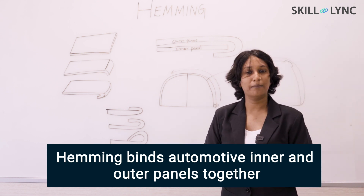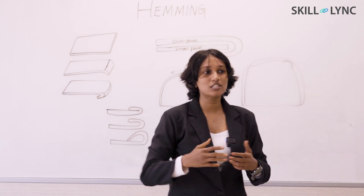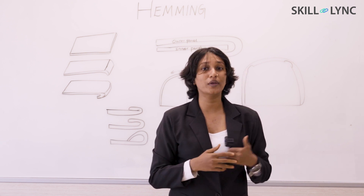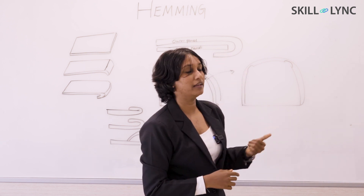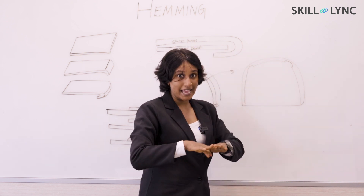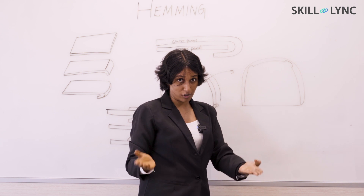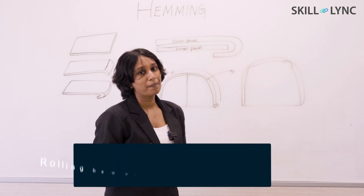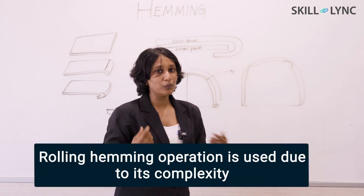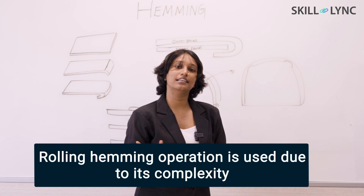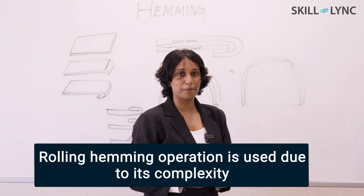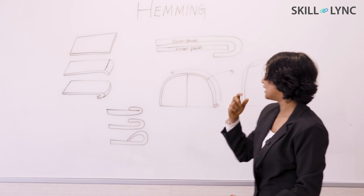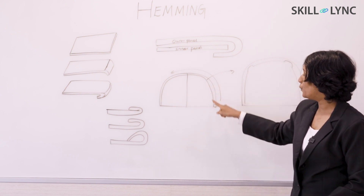In the automotive industry, there will be an inner panel and the outer panel will be folded using a rolling hemming operation, because the hood or back door design is really complex. We go for rolling hemming so that the surface finish and aesthetic look of the outer panel is not compromised.